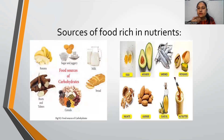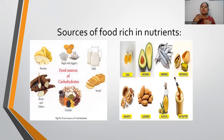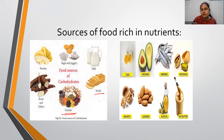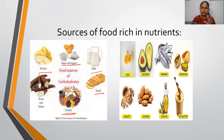Now, what are the sources of these nutrients? For carbohydrates, we can consume cereals, bread, milk, sugar, jaggery, banana, sweet potato, and other root vegetables — these are rich in carbohydrates.